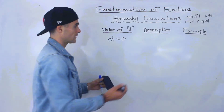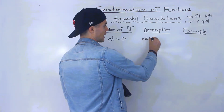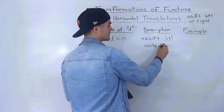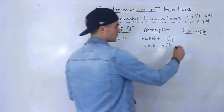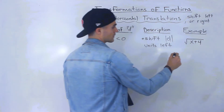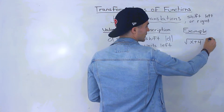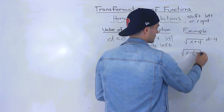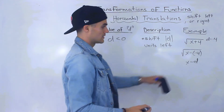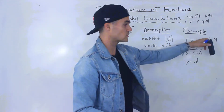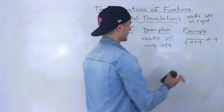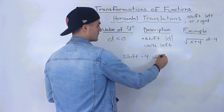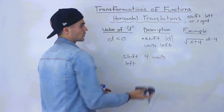And if d is less than 0, then we're going to shift the function the absolute value of d units to the left. An example of that is if we have the square root of x plus 4. The d value is going to be negative 4 — remember it's always the opposite sign. You could rewrite it as x minus negative 4 in the x minus d format, so d equals negative 4. We wouldn't say we're shifting negative 4 units left; we'd just say we're shifting 4 units to the left.